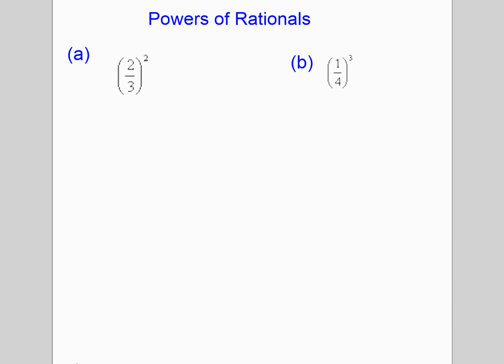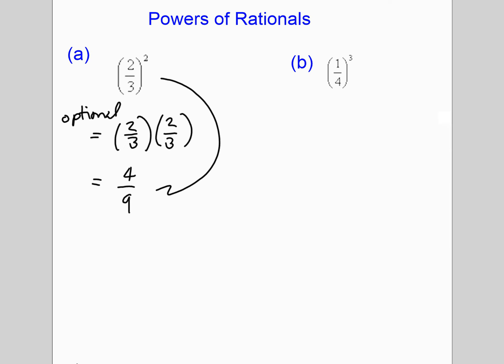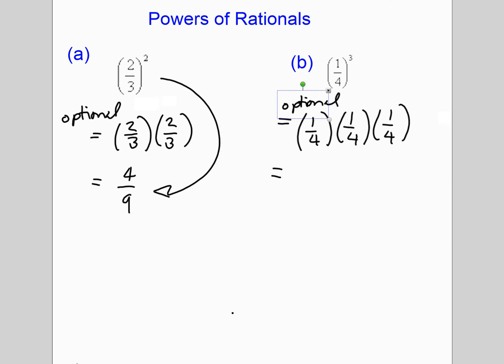When looking at powers, always ask yourself what an exponent means — it means repeated multiplication. The brackets mean that both the top and the bottom are applied to that exponent. This is an optional step, but you can show that (2 over 3) squared means 2 over 3 times 2 over 3, giving 4 over 9. Remember: squaring does not mean 3 times 2 — it means 3 times itself. For (1 over 4) cubed, 1 times 1 times 1 is 1, not 3, and the denominator is 4 times 4 times 4.